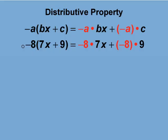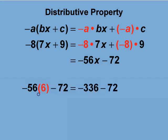We now distribute the negative 8 to both terms, as shown here. Notice that the negative 8 changes addition to subtraction. We evaluate the expression for x equals 6, and we get negative 336 minus 72, which is negative 408.